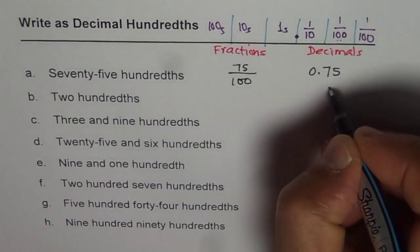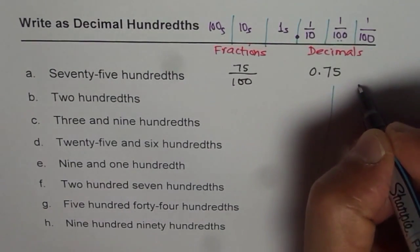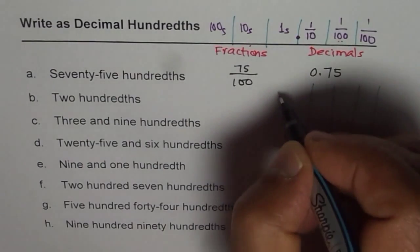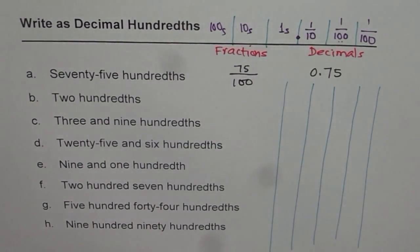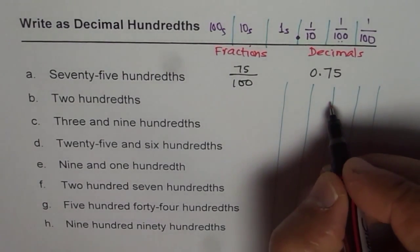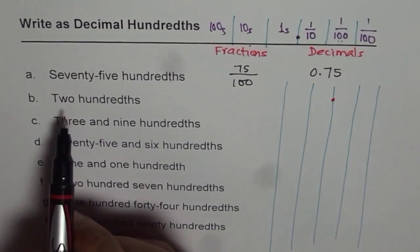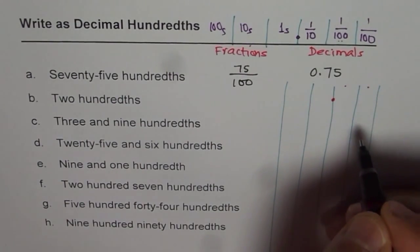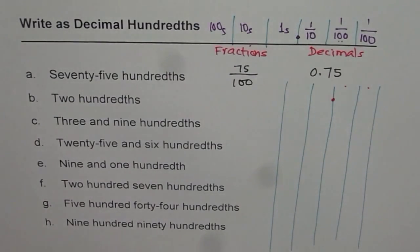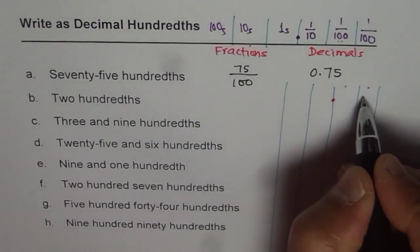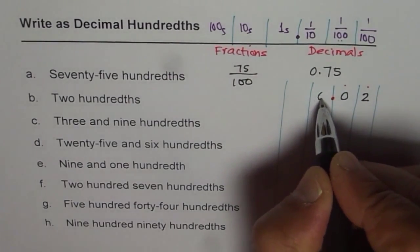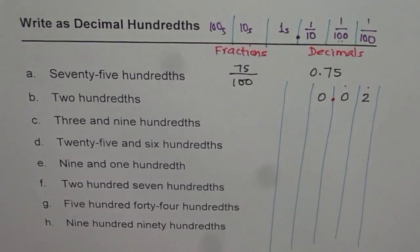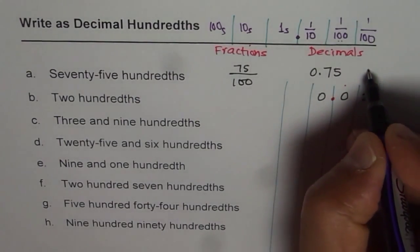I'm drawing a place value chart with columns for tens, ones, decimal point, tenths, and hundredths. For two hundredths, the number 2 goes in the hundredths position, and all other positions are filled with zeros. So two hundredths is written as 0.02. This is another way of writing it — the 2 is in the hundredths position, which is one out of a hundred.